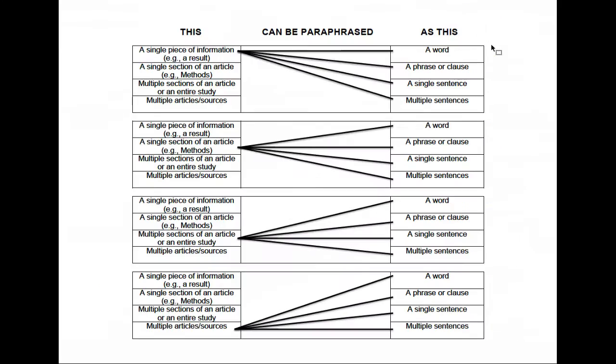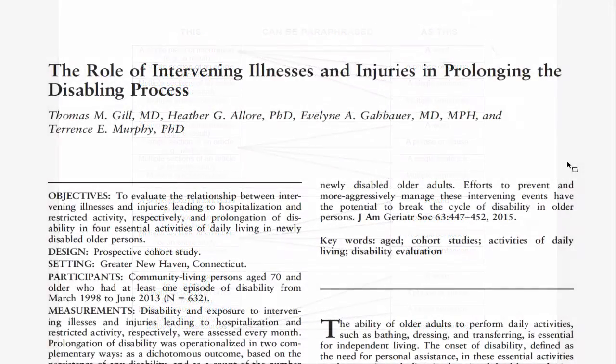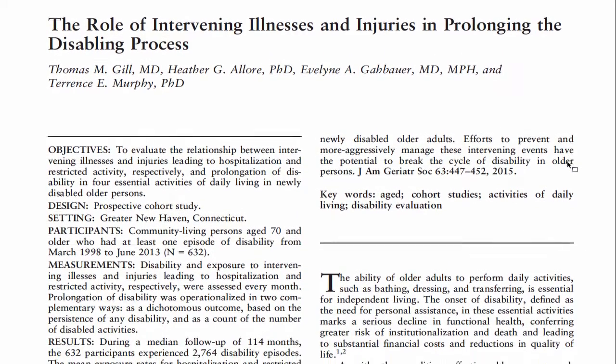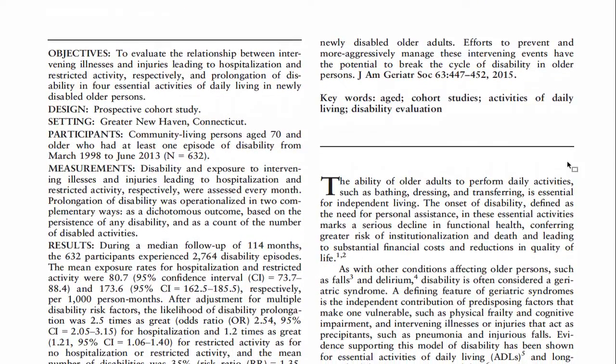Again, the writer has choice. Now that we've discussed the spectrums of lengths and types and ways that source information can be paraphrased, let's look at some examples. The introduction of this article, from the Journal of the American Geriatric Society, provides a great study for seeing all four lengths in action.